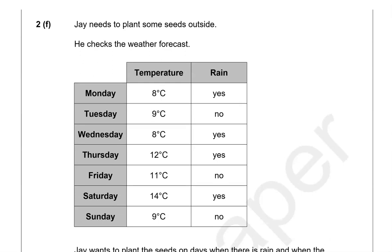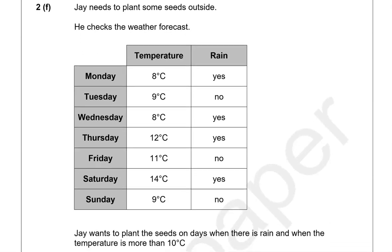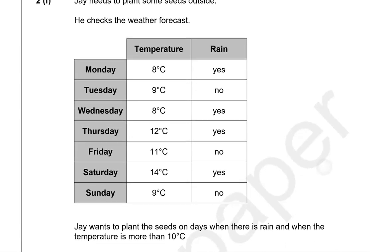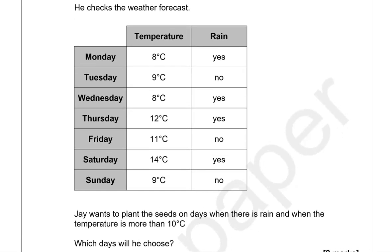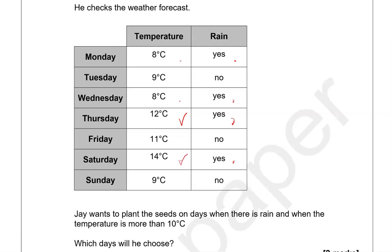Jay needs to plant some seeds outside and checks the weather forecast. Jay wants to plant on days when there is rain and the temperature is more than 10 degrees Celsius. Looking at the days with rain — there are four such days. Of those, temperatures of 8 and 8 are less than 10, but 12 and 14 are more than 10. So he will choose Thursday and Saturday.